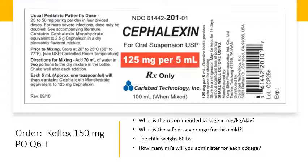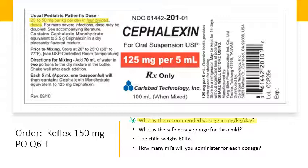This is a weight-based calculation. The order is Keflex 150 mg PO every 6 hours — 4 divided dosages per day. What is the recommended dosage in mg per kg per day? The answer from the package information is 25 to 50 mg per kg per day in 4 divided dosages.